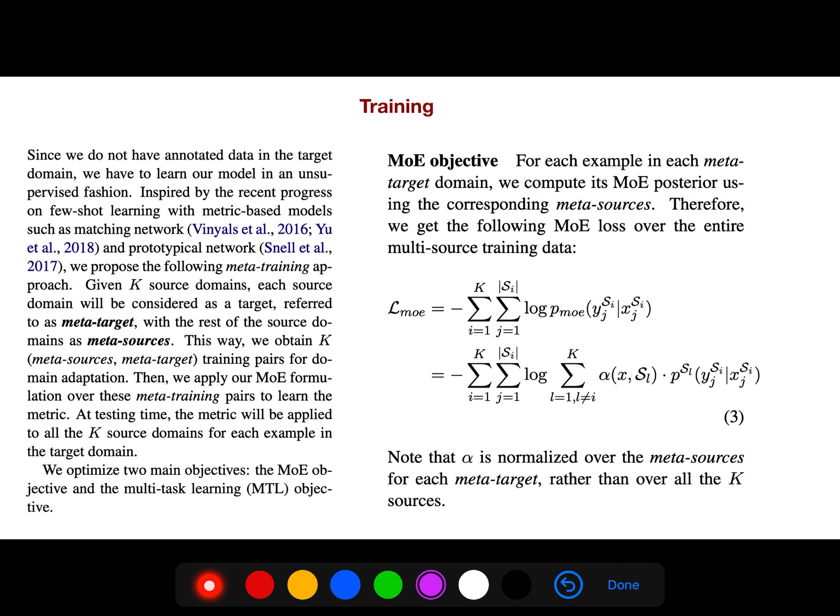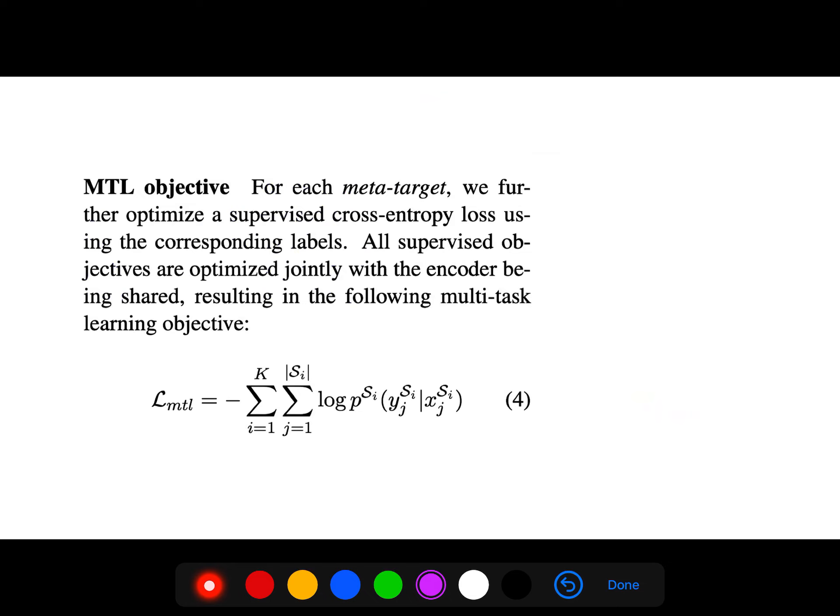For training, for each example in meta-target we compute its mixture of expert posterior. So this is for entire multi-source training, and α is normalized over the meta-sources for each meta-target rather than over all the case sources. For each meta-target we further optimize the supervised cross-entropy loss using the corresponding labels. All supervised objectives are optimized jointly with the encoder being shared.